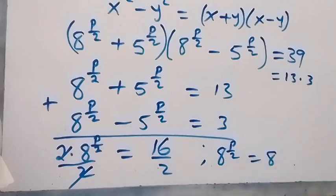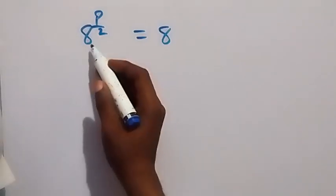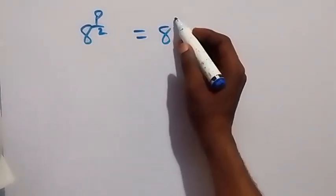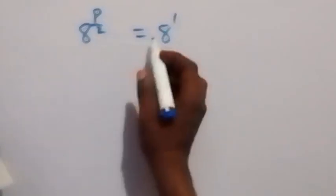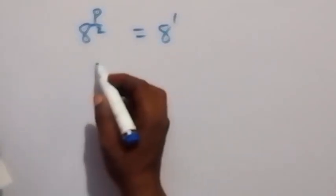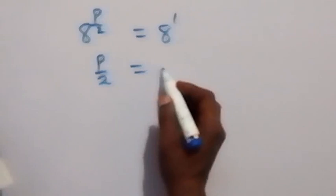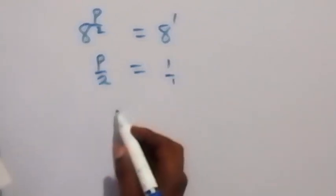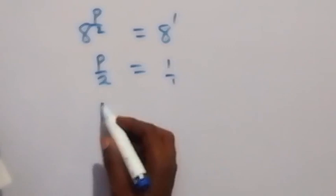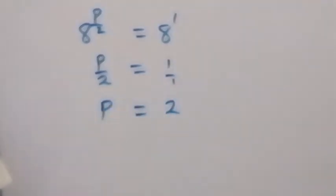Looking at this, we have base 8 on both sides, so 8 raised to power p over 2 equals 8 raised to power 1. We equate the exponents: p over 2 equals 1. Cross-multiplying gives us p equals 2.